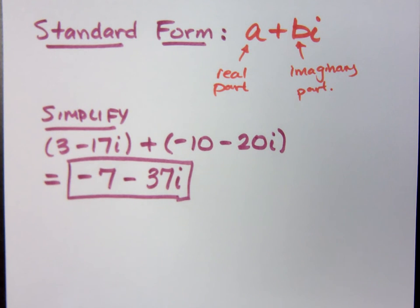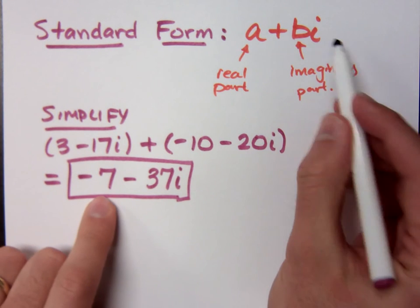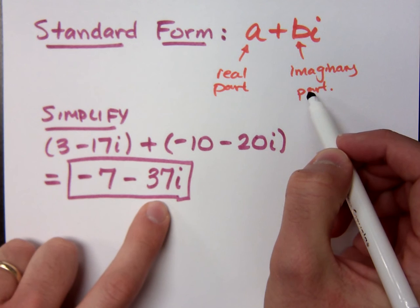Now, the only thing that may be different here in terms of what you would do if it were an x is that if it were an x, the x would come first, followed by the constant. However, in standard form for a complex number, your real part comes first, then the imaginary part with the minus 37i.